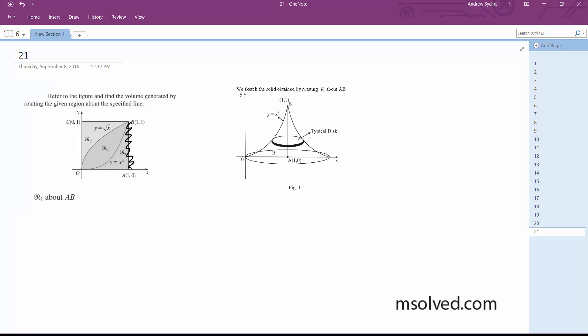So setting this up is going to be an initial area before we spin it. A(y) is going to be equal to π times (1 - y^(1/3))².